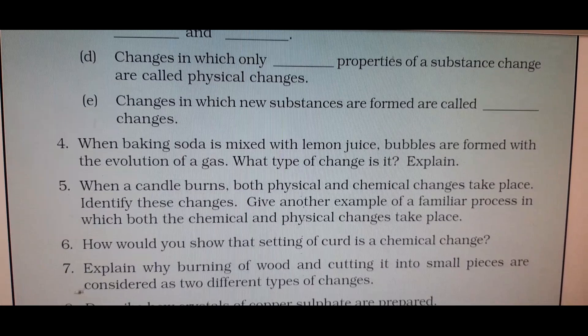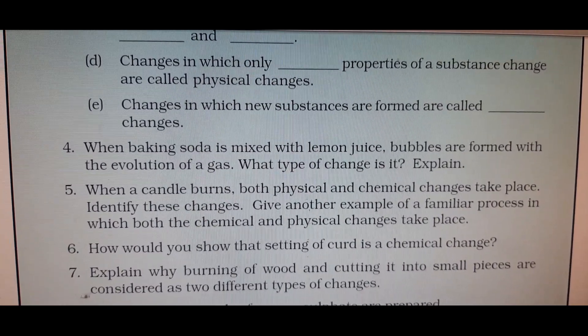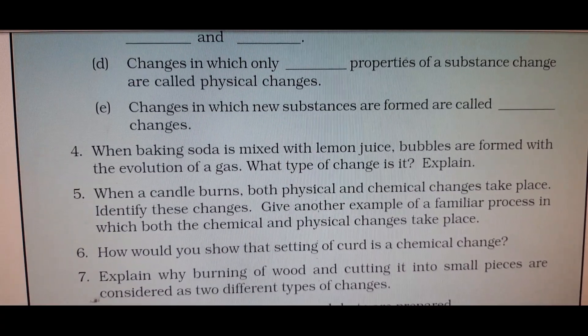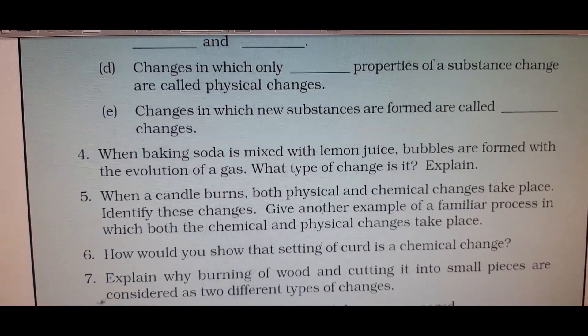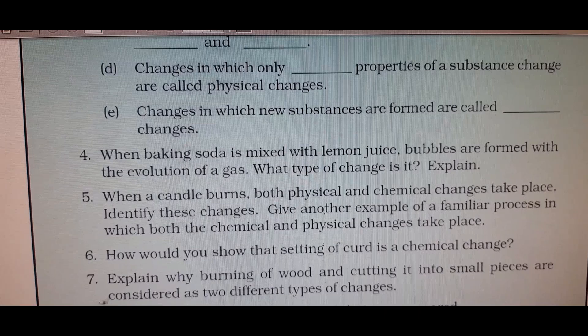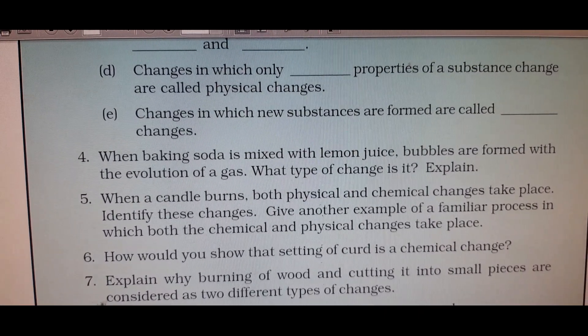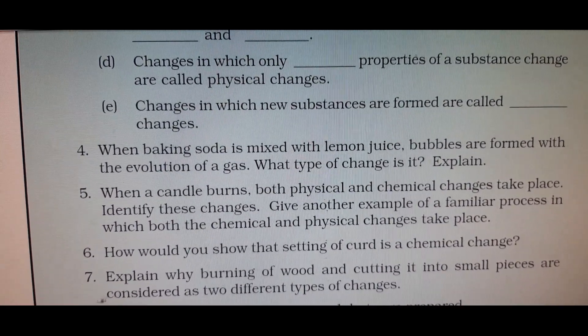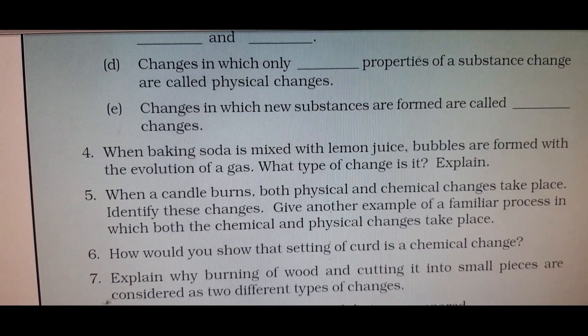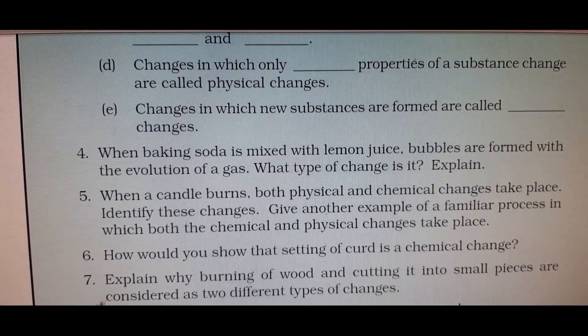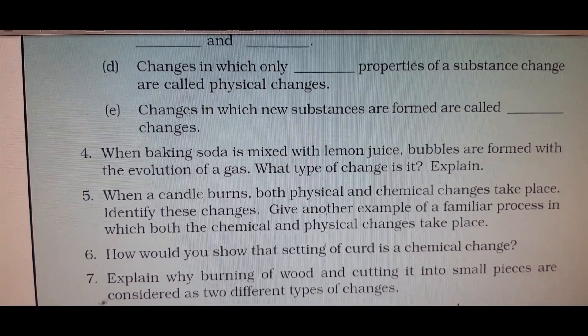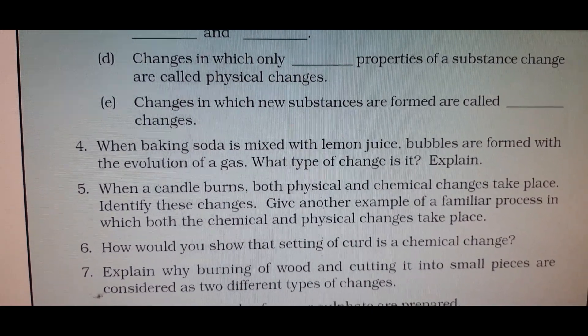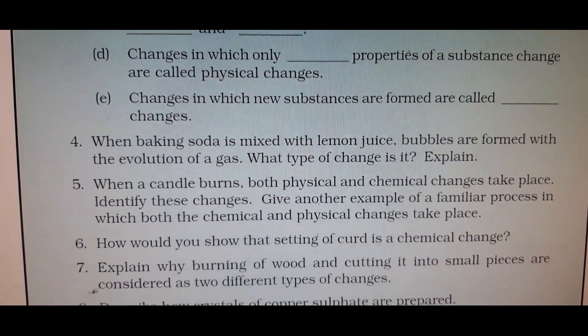Question number 4: When baking soda is mixed with lemon juice, bubbles are formed with the evolution of gas. What type of change is it? Baking soda is a base, lemon juice is an acid. Acid and base react with each other to form salt, water, and baking soda contains carbon, so it will form carbon dioxide. It is a chemical change. When baking soda is mixed with lemon juice, salt, water and carbon dioxide gas is produced. This is a neutralization reaction. Since new substances are formed, this is a chemical change.